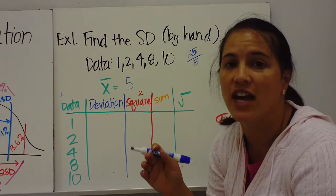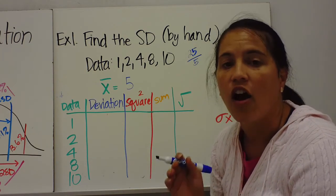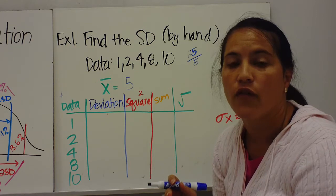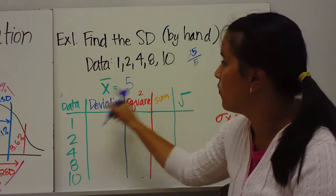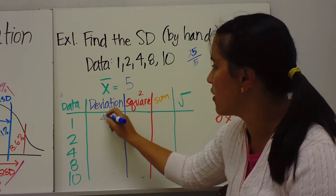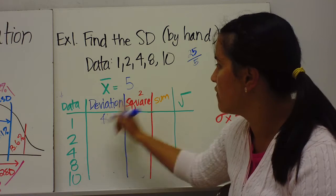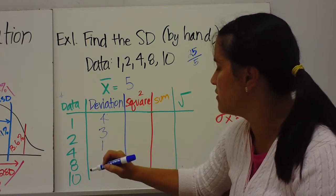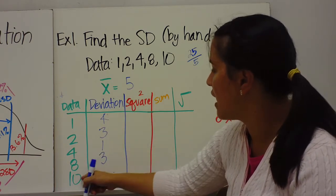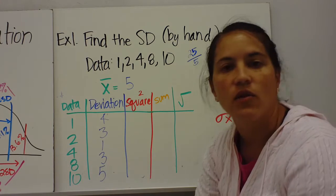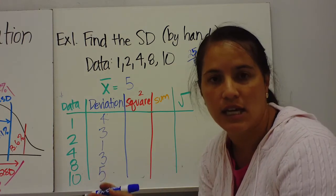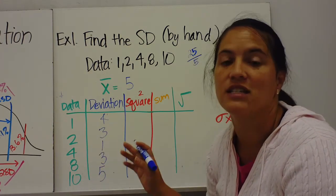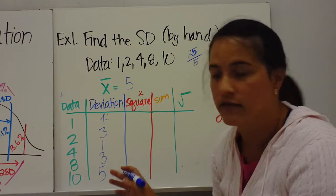Step two: find the deviation — how far away each value is from the mean. 5 minus 1 is 4, 5 minus 2 is 3, 5 minus 4 is 1, 8 minus 5 is 3, and 10 minus 5 is 5. I subtracted the mean from each data value to find the deviation, keeping them all positive.